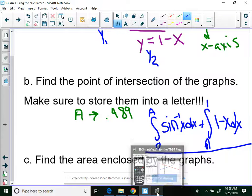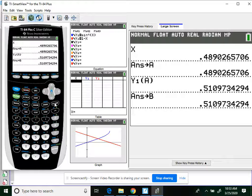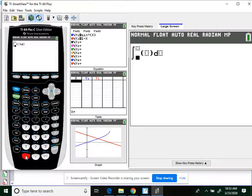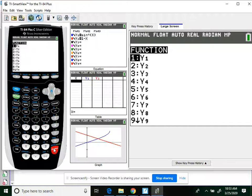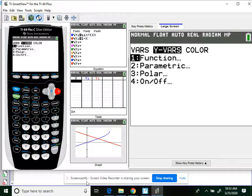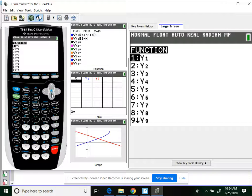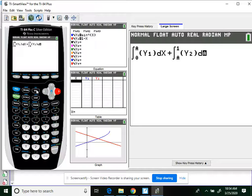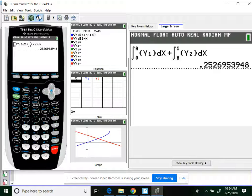So this is my integral. This is what I'm integrating. So if I go to my calculator, I'm going to go to the main screen. Math 9. We're going from 0 to A of y1, VARS, enter, enter, dx. Plus, I'm going to do this in one shot because I don't feel like doing more work. Math 9, A to 1 of my y2, dx, enter, 0.253.